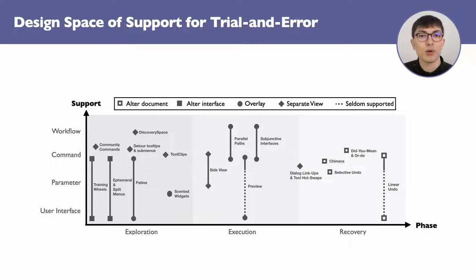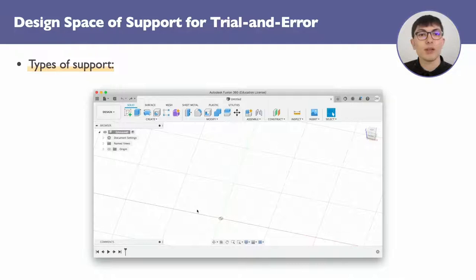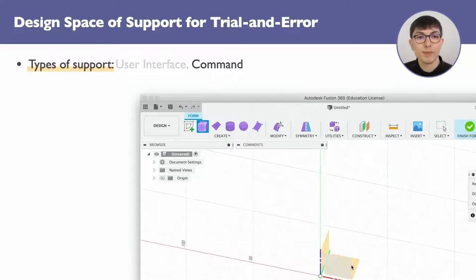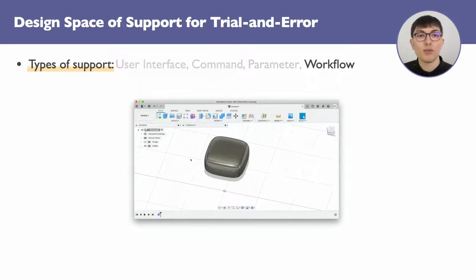In the first dimension, we found that users use trial and error to figure out four different aspects of the software. The user interface, for example, trying to move or hide a panel. A command, as we showed in our previous examples. The parameter of a command. Or, at a higher level, a workflow, which corresponds to a sequence of commands.